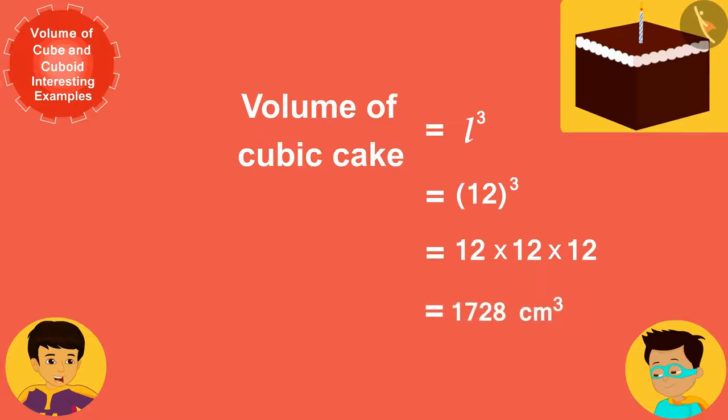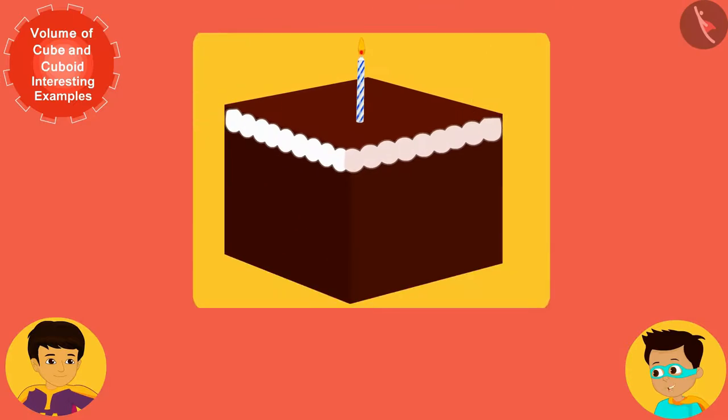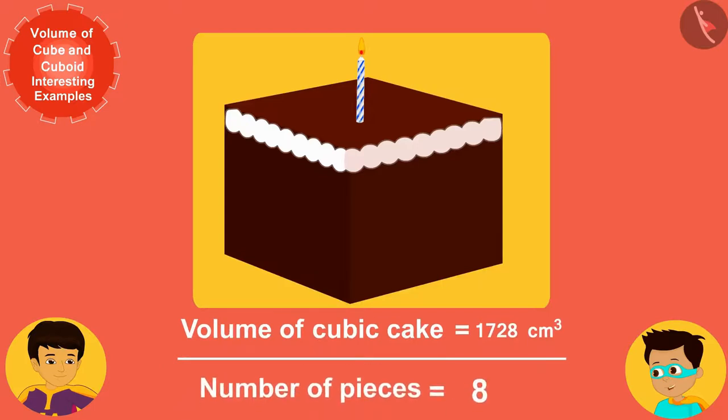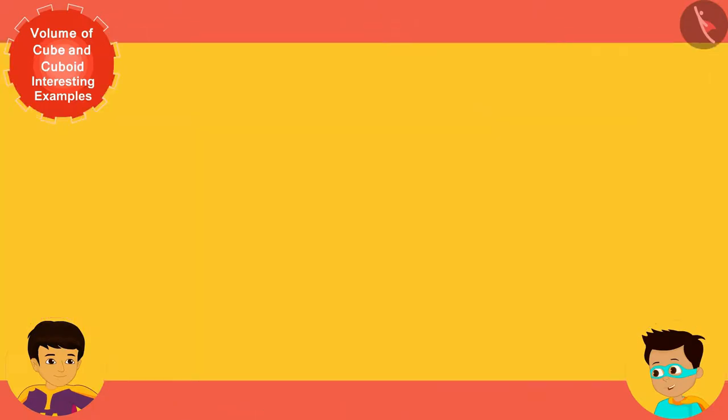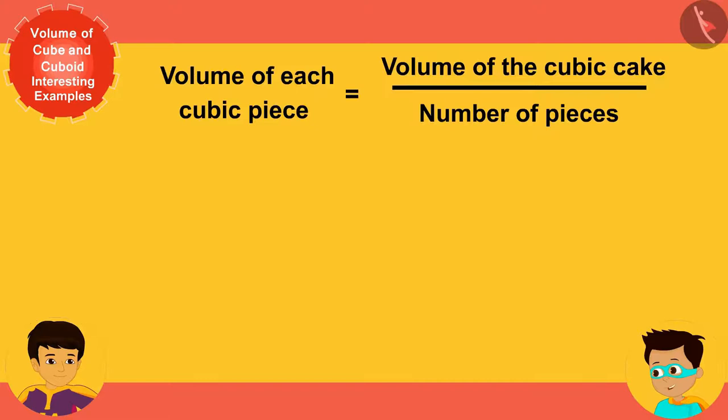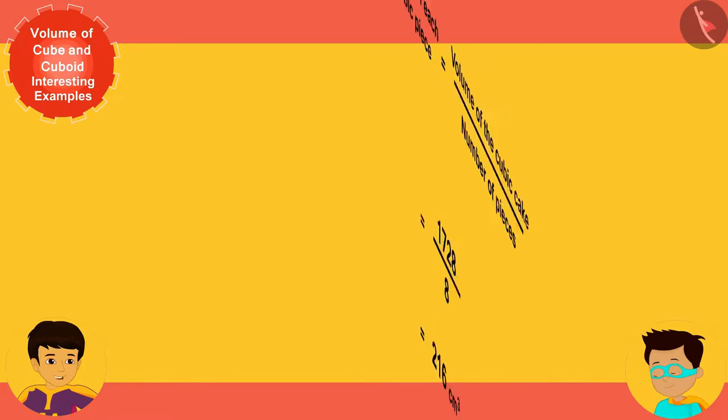Good! Now if we divide the total volume of this cake by the total number of pieces, eight, we will know the volume of each cubic piece. Look, the volume of each smaller cube cake is 216 centimeter cube.